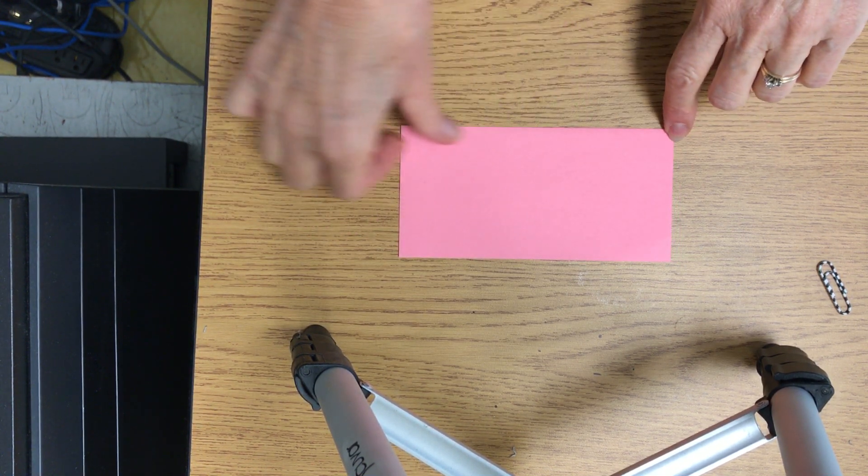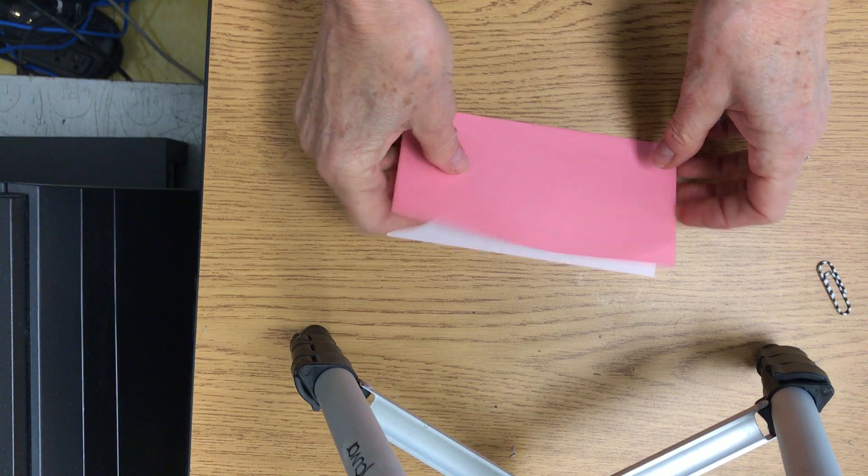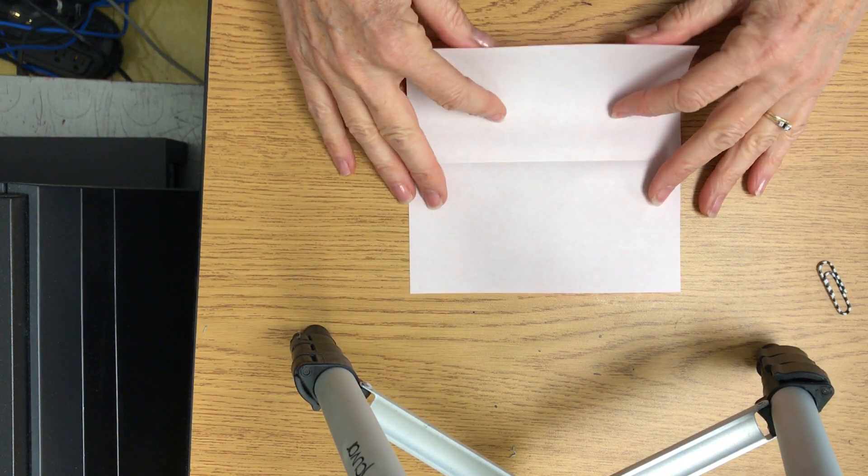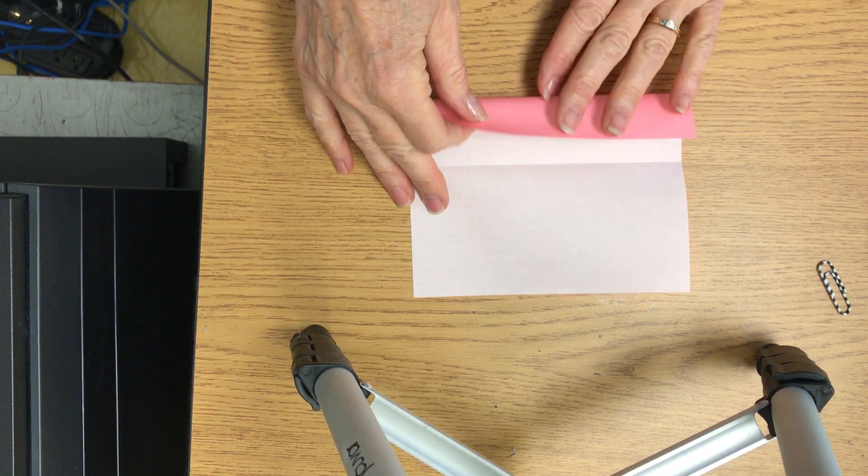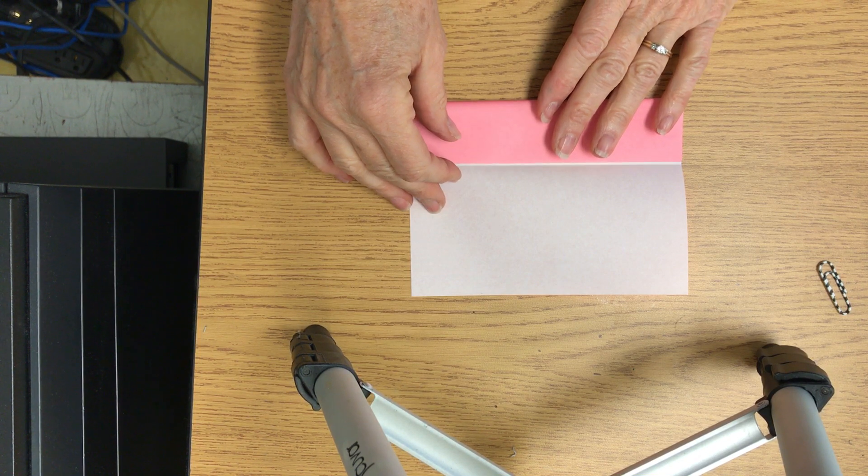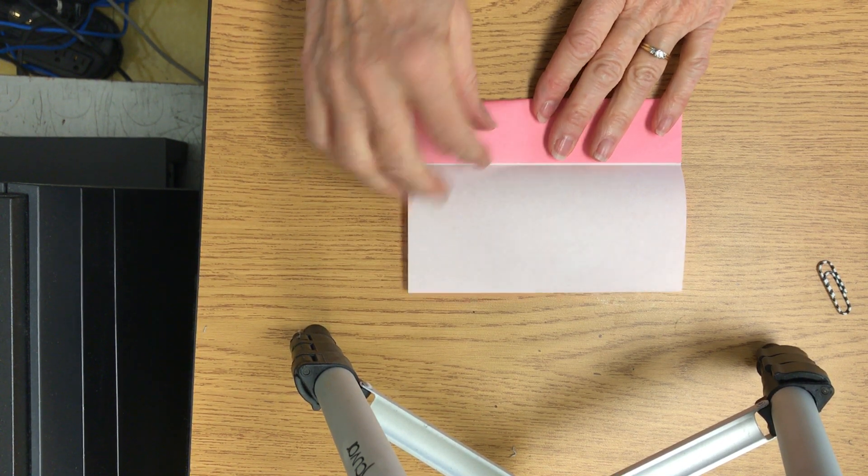Nice, sharp creases. We open this up again, and we're going to fold the edges into the center. We do not want to go past the center, but just up to the center.